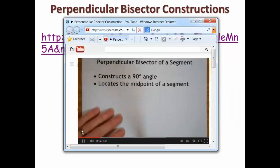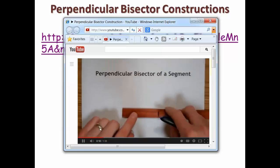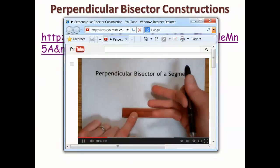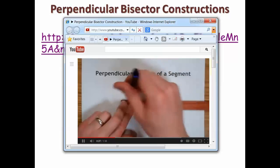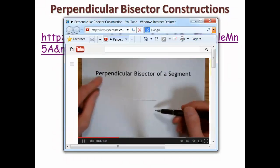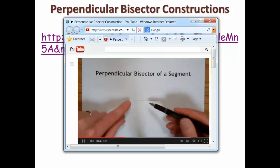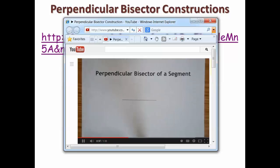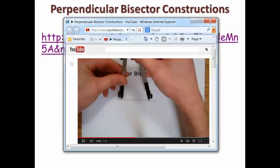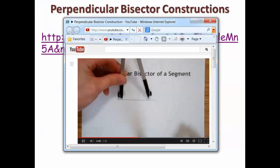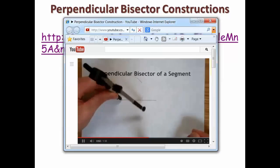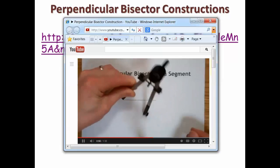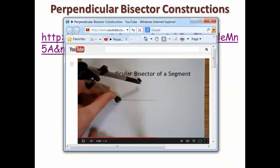You want to start with a segment somewhere in the middle of your page so you have some space above and below. Remember that perpendicular means it's going to cross at a 90 degree angle and bisect means that it's going to cut it into two congruent parts. First step, set your compass so that it is more than halfway across the segment. I'm going to set mine about this much.